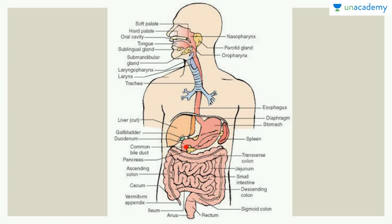Here we've got the stomach, and beside it there's a gland known as the liver. The liver also has this green-colored structure adjacent to it, which is the gallbladder. Then we've got the duodenum, which is a D-shaped structure and is the topmost part of the small intestines. It terminates into the jejunum, a J-shaped structure, and the rest of the small intestines is the ileum. We also have a common bile duct coming from the gallbladder and liver.